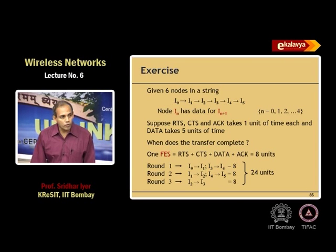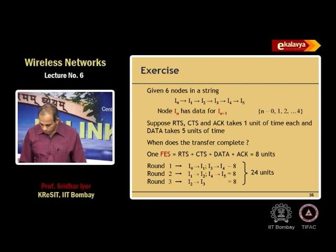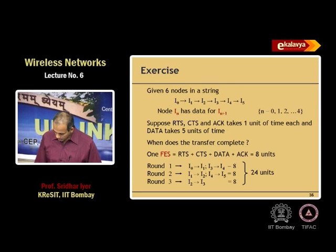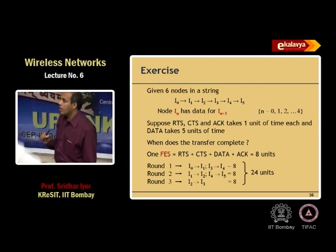Can I3 transmit to I4? Yes. In the first round, I0 goes to I1 and I3 can transmit to I4 in parallel — that is 8 units. In the next round, I1 transmits to I2 and I4 to I5. In the third round, I2 can transmit to I3. So the minimum time is 24 units of time for this data transfer to complete.